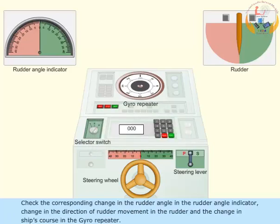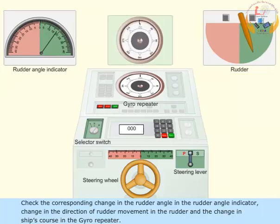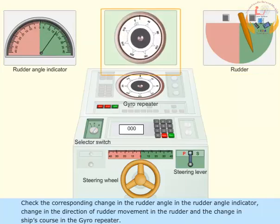Check the corresponding change in the rudder angle in the rudder angle indicator, change in the direction of rudder movement in the rudder and the change in ship's course in the gyro repeater.